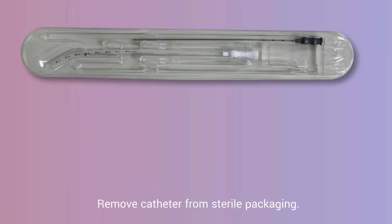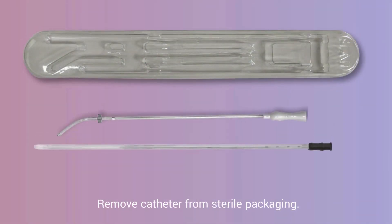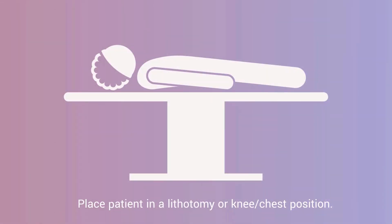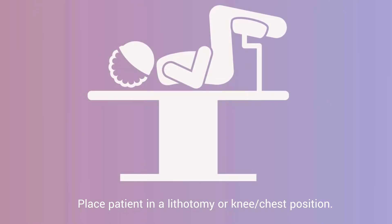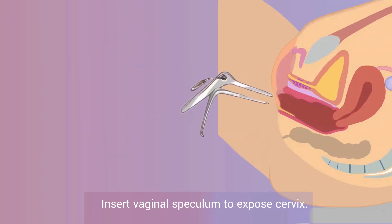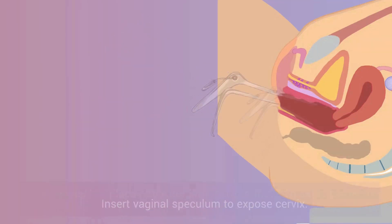Remove the catheter from sterile packaging. Place the patient in a lithotomy or knee-chest position, then insert a vaginal speculum to expose the cervix.